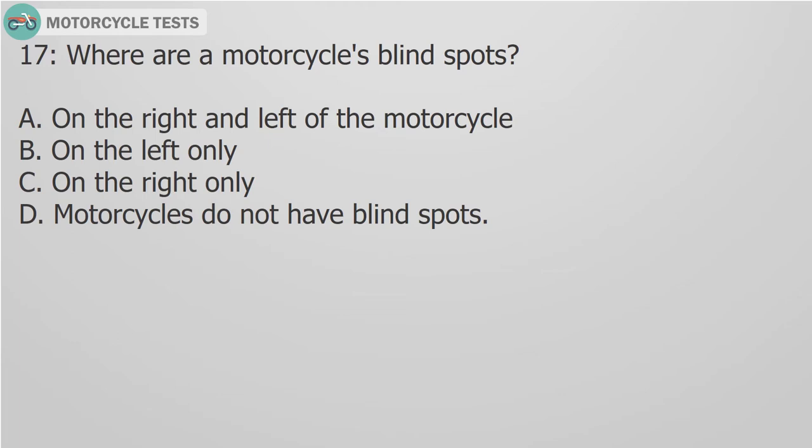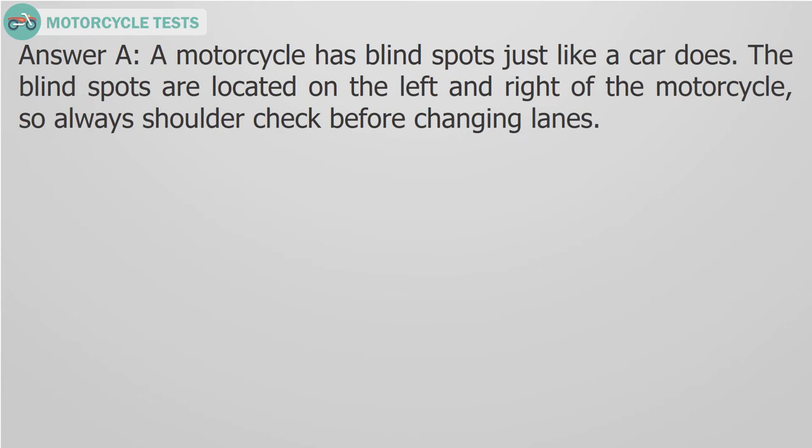Question 17. Where are a motorcycle's blind spots? A. On the right and left of the motorcycle. B. On the left only. C. On the right only. D. Motorcycles do not have blind spots. Answer A. A motorcycle has blind spots just like a car does. The blind spots are located on the left and right of the motorcycle, so always shoulder check before changing lanes.